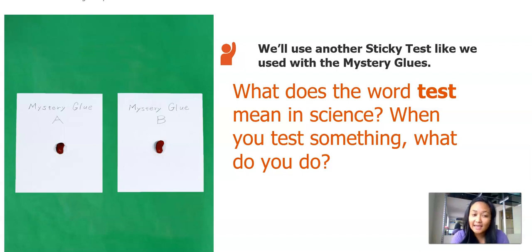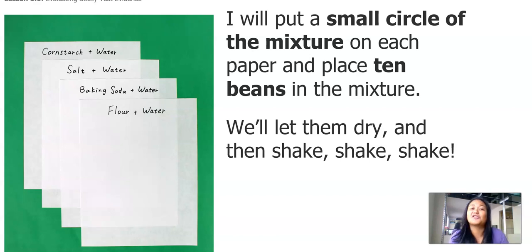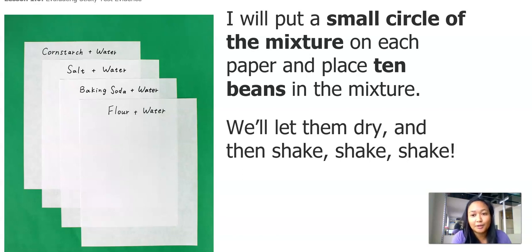In this case, we are trying to think about and observe and test the property of being sticky. So just like in our previous sticky test, I'm going to use some paper. And I actually found some beans that I'm going to use. Instead of using two, I'm going to use 10 beans for each mixture. I'm going to label each paper with a different mixture. So I'm going to let them dry and then we'll shake, shake, shake and see what happens.